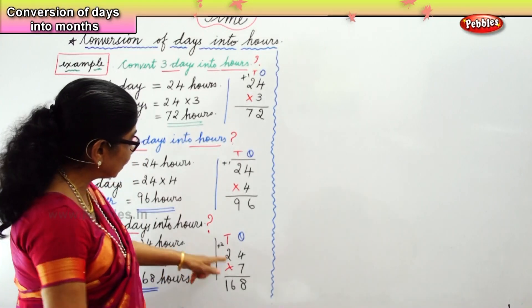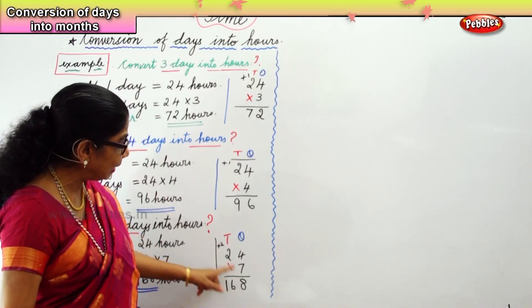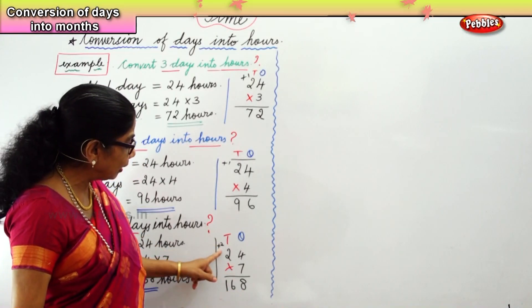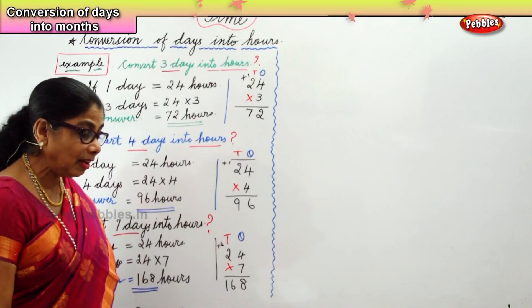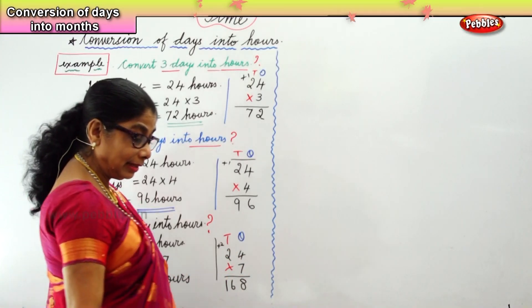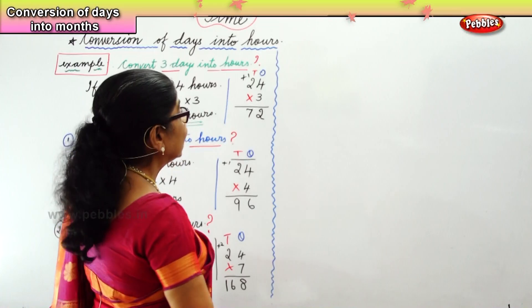Let's look at it again: 7 fours are 28, carry over 2. 7 twos are 14, plus 2 is 16. So our answer for 7 days is 168 hours. Now let's take another sum: convert 15 days into hours.